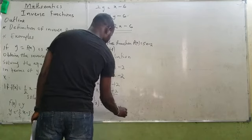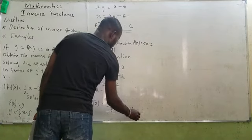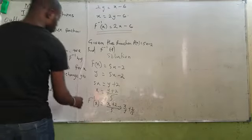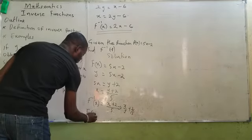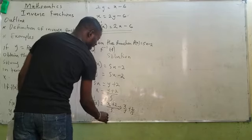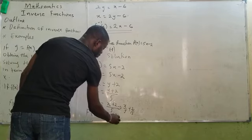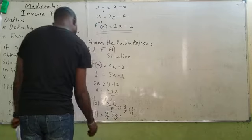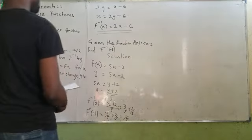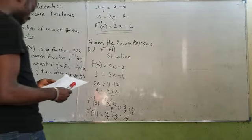It means my f inverse of x equals x plus 2 all over 5, which also implies x over 5 plus 2 over 5. We are now told to find f inverse of minus 1, which means I will be having minus 1 all over 5 plus 2 all over 5, which gives 1 all over 5. That is all — 1 over 5.